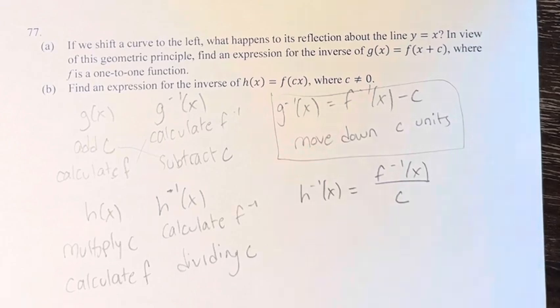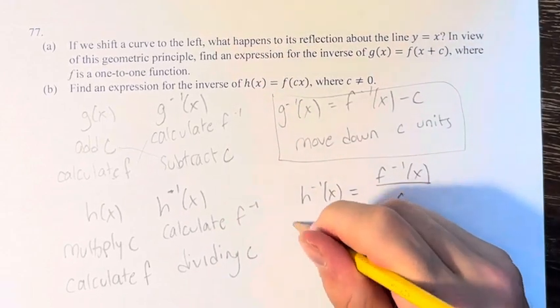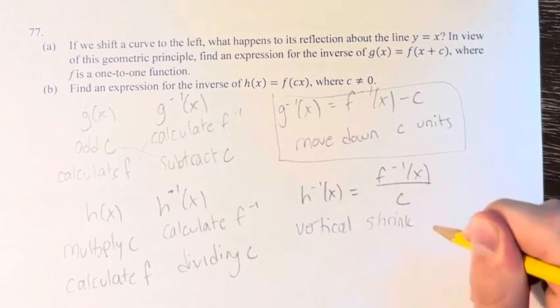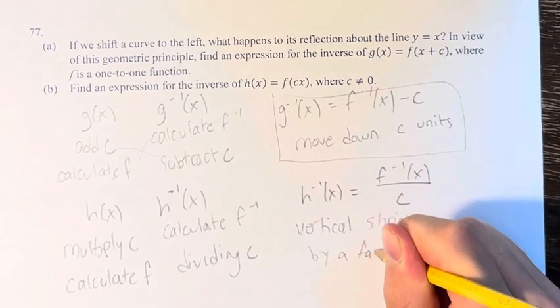Therefore, this is a, I know it doesn't ask for what it actually looks like, but we know, this is a vertical shrink by a factor of c to the inverse, the reflection over the line y equals x.